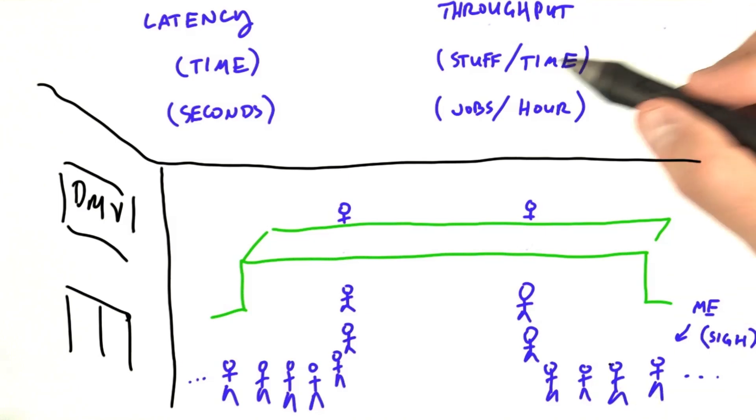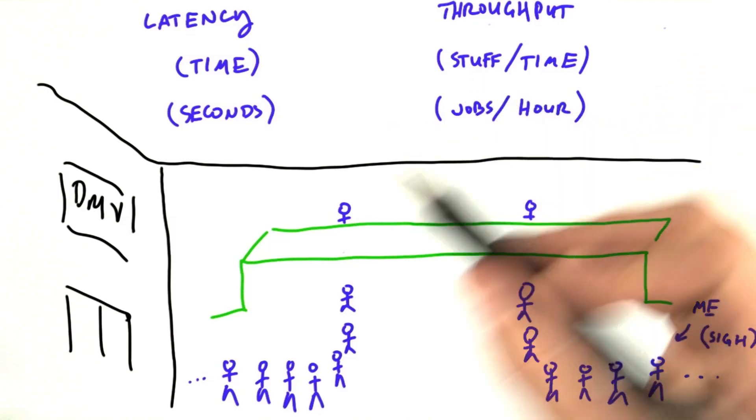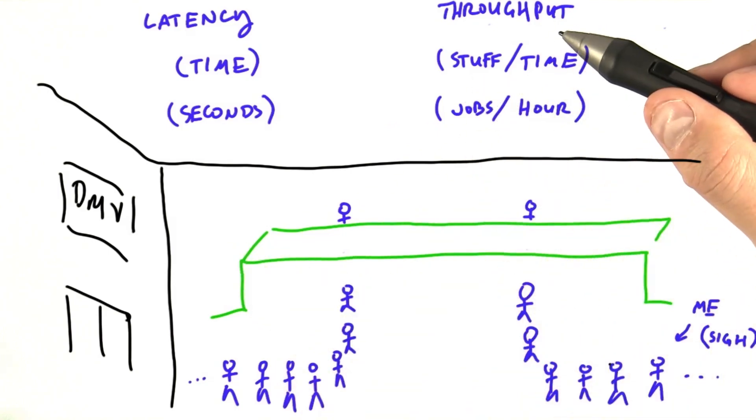This is not necessarily the fault of the DMV though. The reason this happens is because your goals are not aligned with the DMV's goals. Your goal is to optimize for latency.